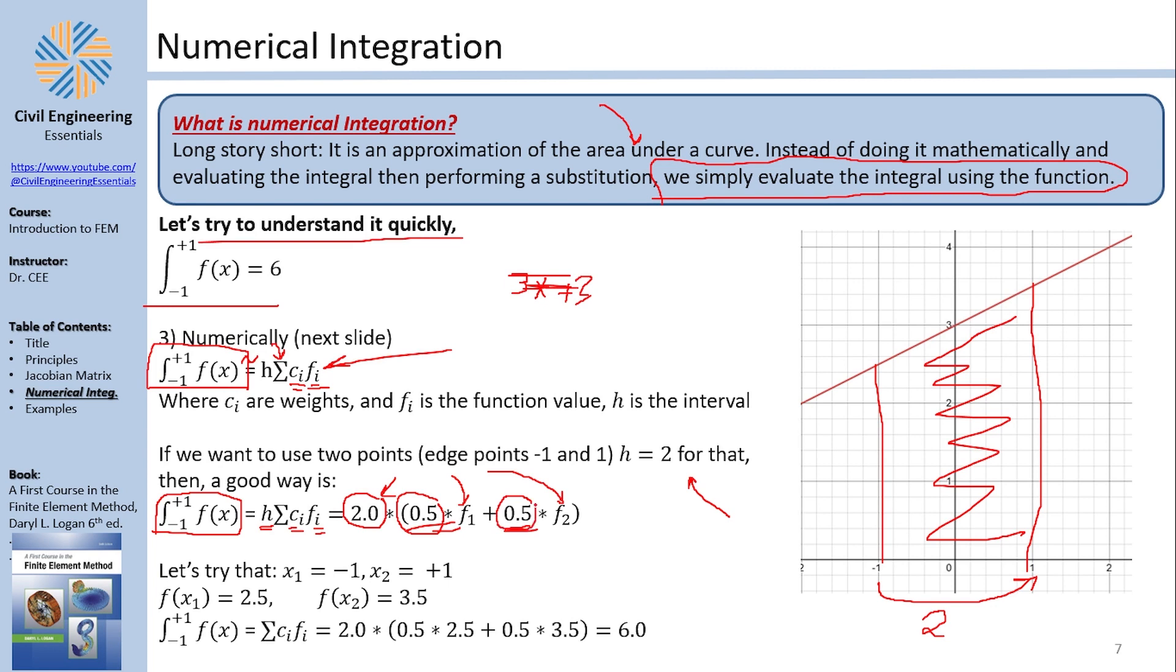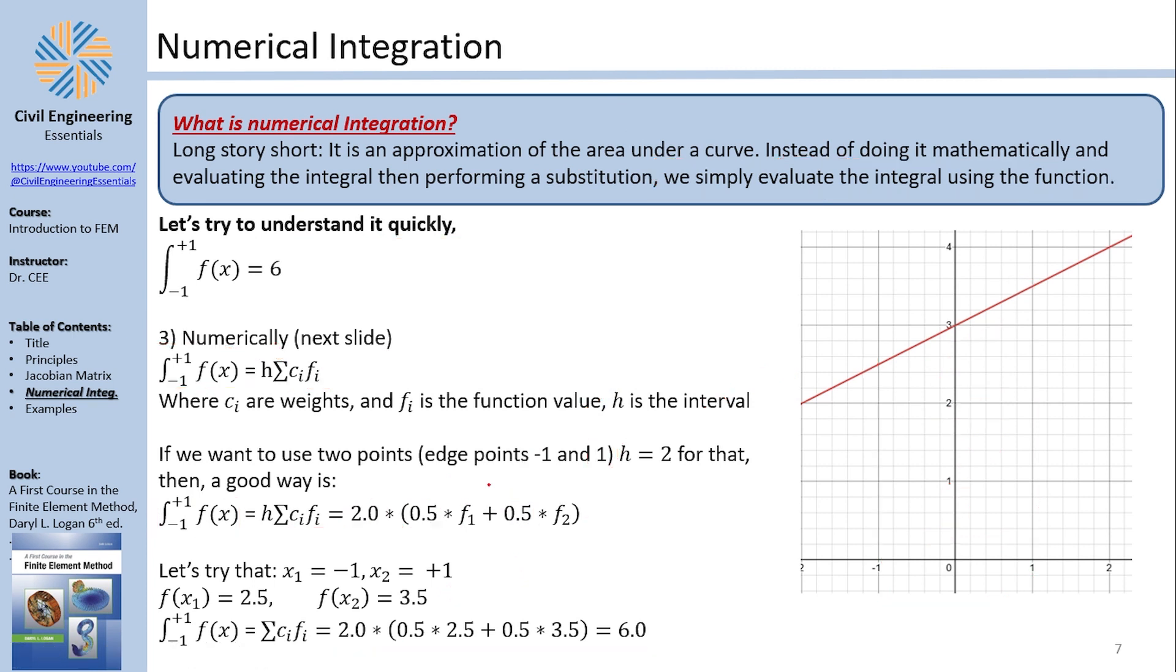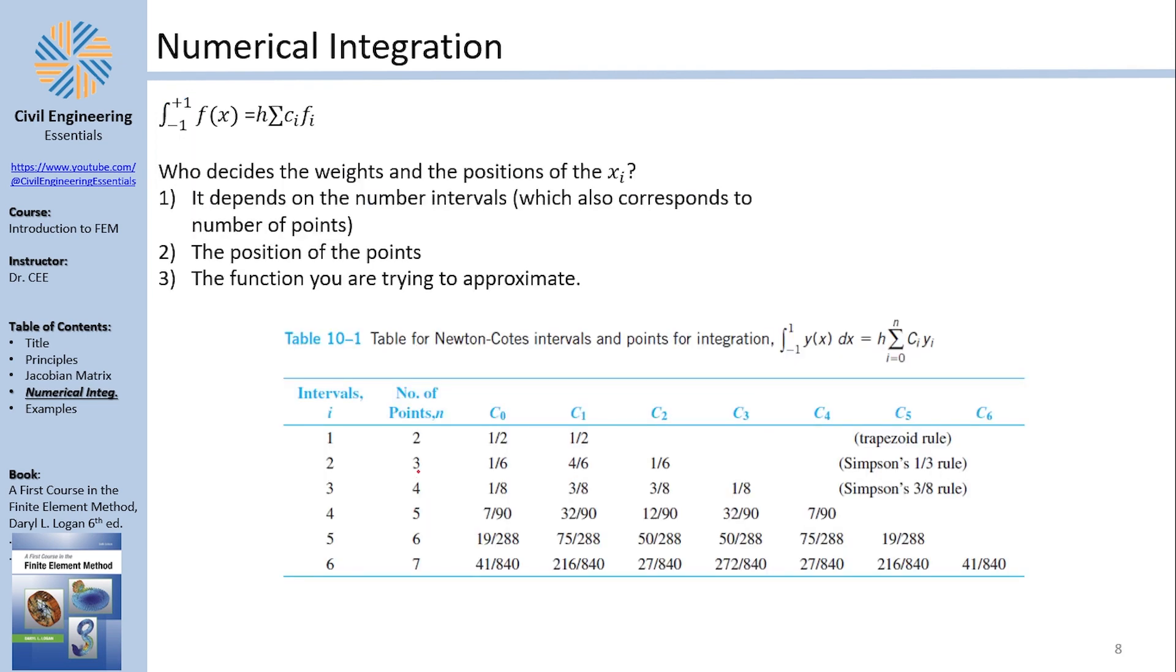So now all I have to do to numerically integrate this is to take the first bound negative one, plug it into the function, get the value f1 which is basically 2.5 here, and get the one, plug it into the function and get the value f2 which is basically 3.5, and then just put it back into the equation. Well I've just done that and you can see that hey look, it's actually 6. Now of course the question is how did I select the two points here and how did I select those weights? As a matter of fact I'm not the one who selects those things, it's actually already decided.